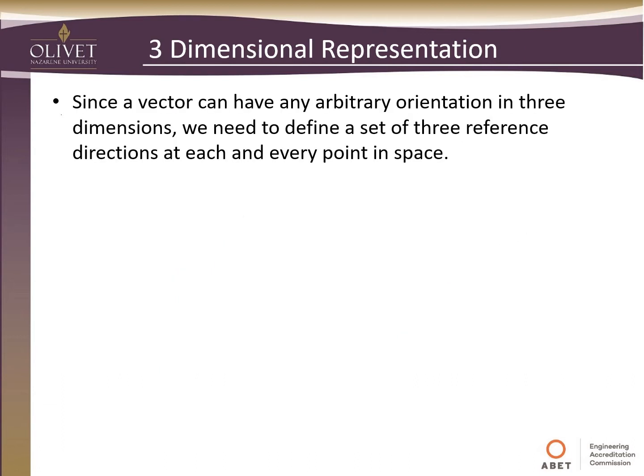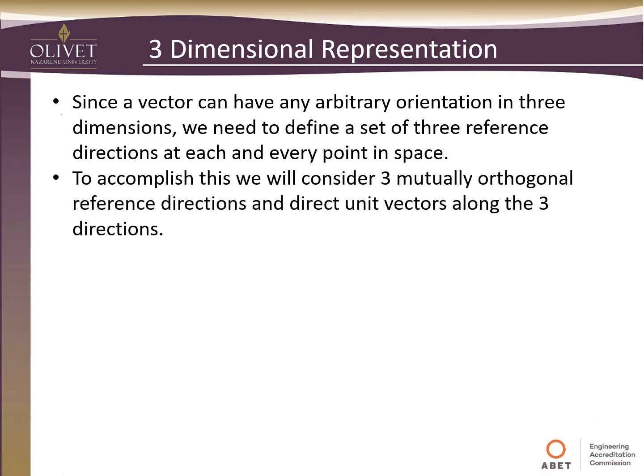Since a vector can have an arbitrary orientation — pointing in any direction in three dimensions — we need to define a set of reference directions at each and every point in space so we can know how to compare these vectors. To accomplish this, we'll consider three mutually orthogonal reference directions and direct unit vectors along those three directions. Orthogonal means you can't write any one of those directions in terms of the other two — there's no way to combine the other two to arrive at the third one.